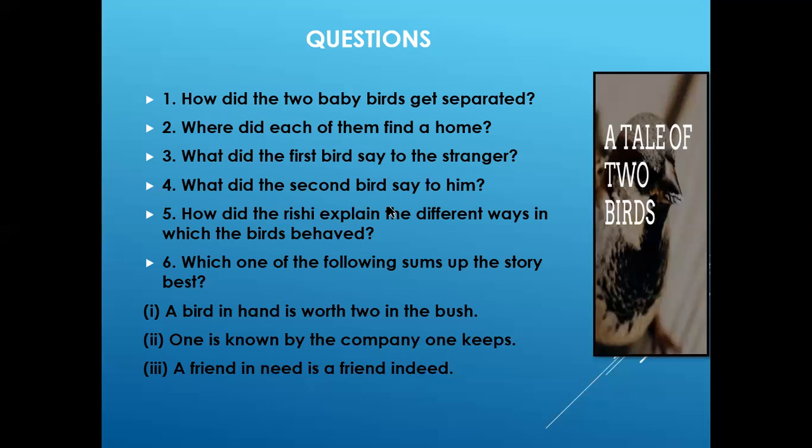In both these questions — question number three and question number four — you must refer to the king as stranger, and if you want to refer to him as the king, you must put in a sentence that says that the king was the stranger. Fifth question: how did the rishi explain the different ways in which the birds behaved? The king was surprised about the different behavior of the two birds. He questioned the rishi, and the rishi explained that the first bird imitated the same words that he heard from the robbers, whereas the second bird repeated the words that he had always heard at the ashram. This implies that the different behavior between the two birds was the result of the company in which they lived.